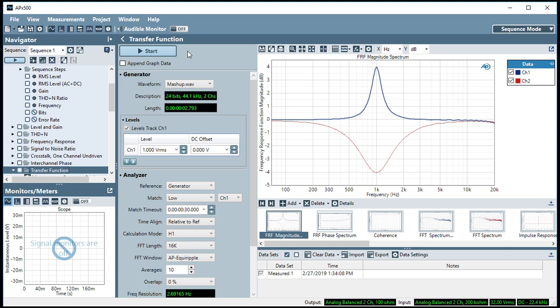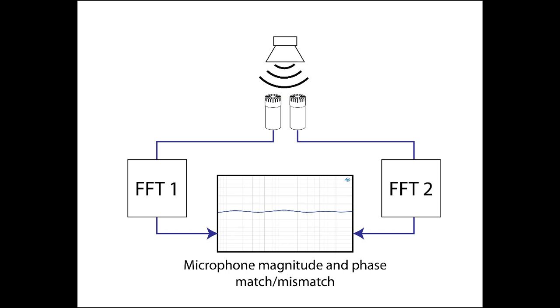What's more, instead of just making an input-output measurement, you could use transfer function to compare two devices. A good example being microphones in an array. Play the same signal to the microphones, and the transfer function will indicate how well they are matched, in both magnitude and phase, in the practical mounting arrangement and acoustic field.